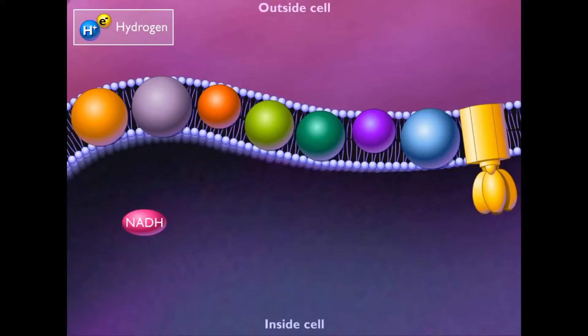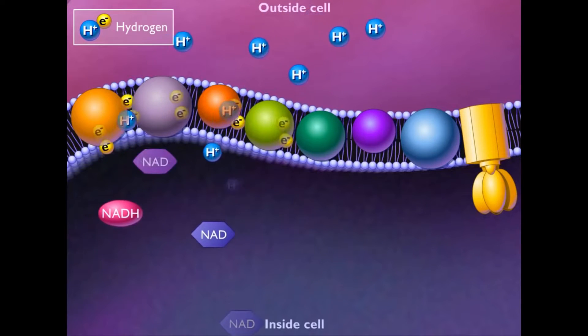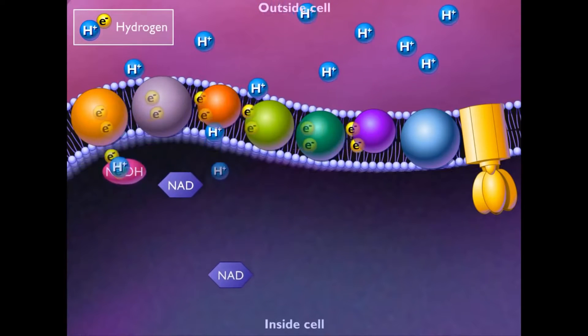Electrons enter the electron transport chain when NADH transfers its protons plus electrons to a membrane-embedded carrier protein. The electrons are sequentially carried along the electron transport chain while the protons are shuttled to the outside of the membrane.